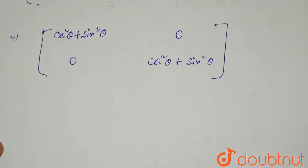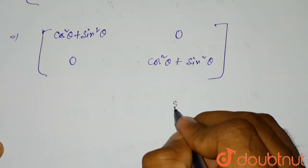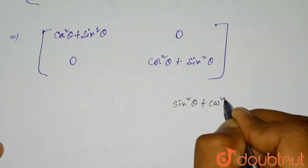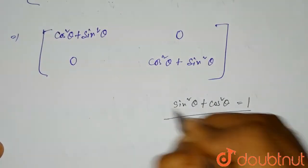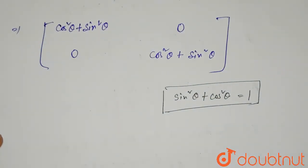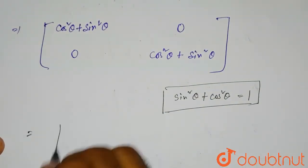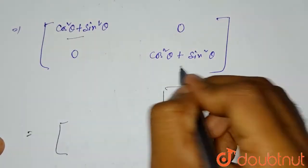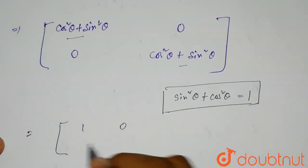Now we know that the trigonometric identity which is sin square theta plus cos square theta equals 1. So using this identity, the final matrix will be, so this value will be 1, this one will be 1. So it will be 1, 0, 0, 1.